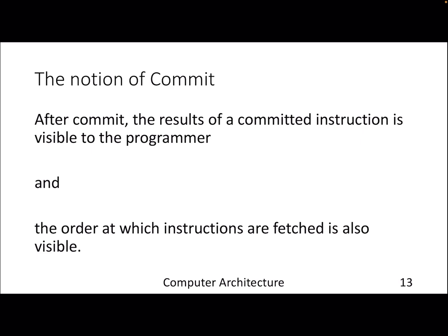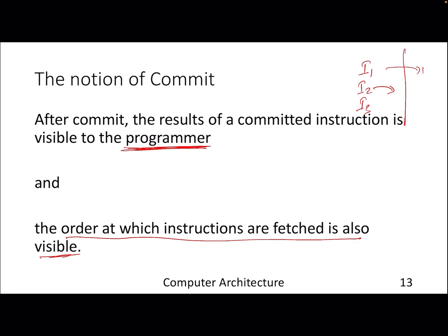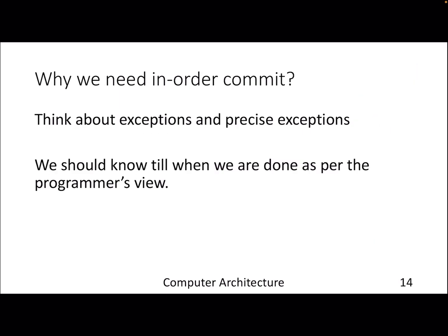The notion of commit: we need a point where the results of completed instructions are visible to the programmer. We need to ensure that the order in which instructions are seen matches program order. Even if instruction i2 finishes first, from the programmer's perspective i1 must be visible first, then i2, then i3. This is why we need in-order commit — think about exceptions: if we have a set of instructions and an exception occurs at instruction ik, we need to maintain a precise state up to that point.